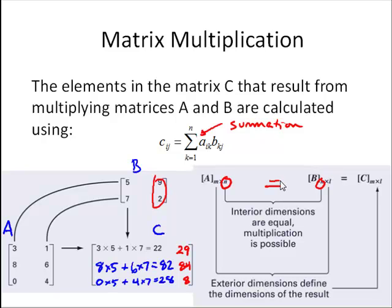The number of columns in A must equal the number of rows in B. And then the outside dimensions, the number of rows in A and the number of columns in B, those give us the overall dimensions or size of the result C.